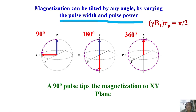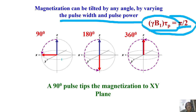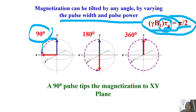By varying the pulse width and pulse power you can tilt the magnetization by any angle. For a 90-degree pulse, you tilt the magnetization from the Z-axis to the X-axis. Keeping power constant, the pulse width required for this pi/2 flip angle is on the order of 5 to 10 microseconds for protons. If you double the pulse width while keeping everything else constant...